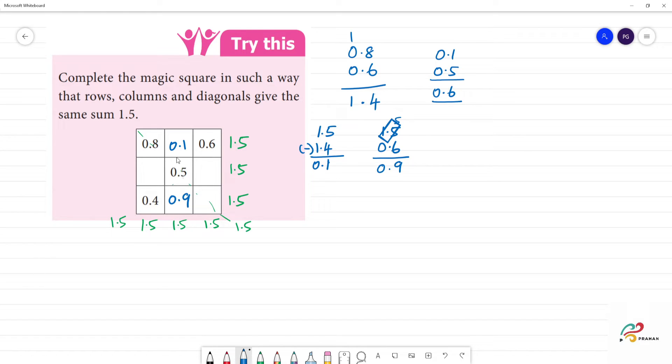Clear. Now we have 0.4 and 0.9, so here we have 1.3. So here we have 1.5 minus 1.3, subtraction. 5 minus 3 is 2, 0. Now we have 0.2.